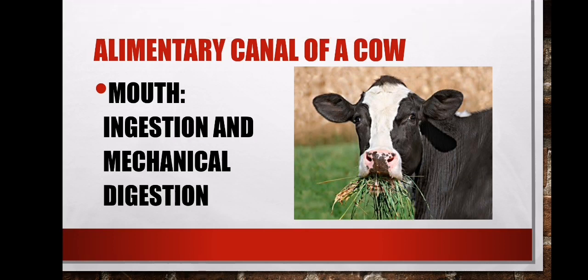Greetings good people. Here is our chance to look at the alimentary canal of a cow. Remember that when we talk about a cow, we are talking about an animal categorized as a ruminant animal. Ruminant animals are those that have a complex stomach with about four chambers. These animals can regurgitate, meaning they can bring food back to the mouth for proper chewing — chewing the cud. These animals are also able to digest cellulose.